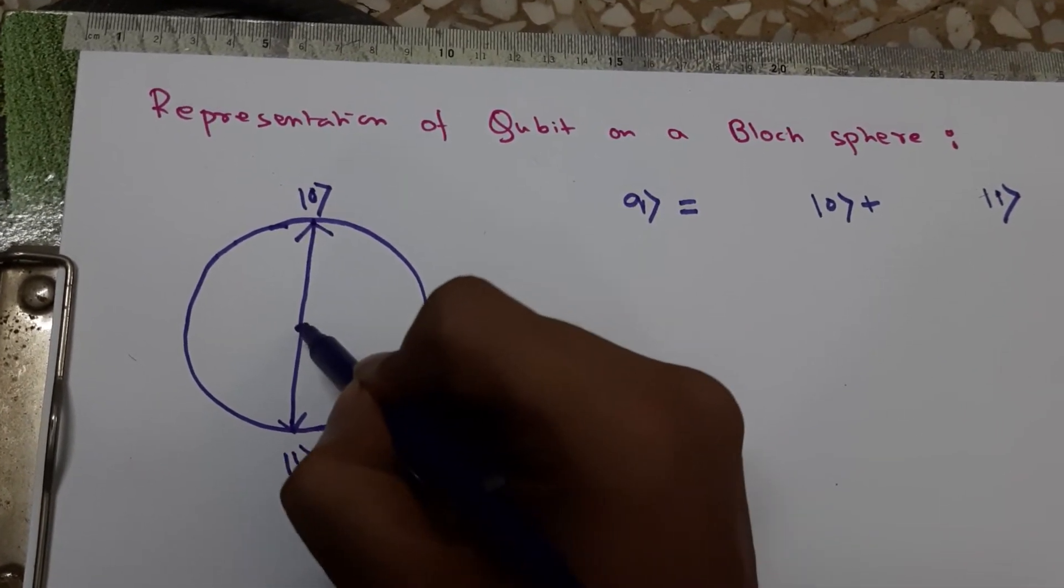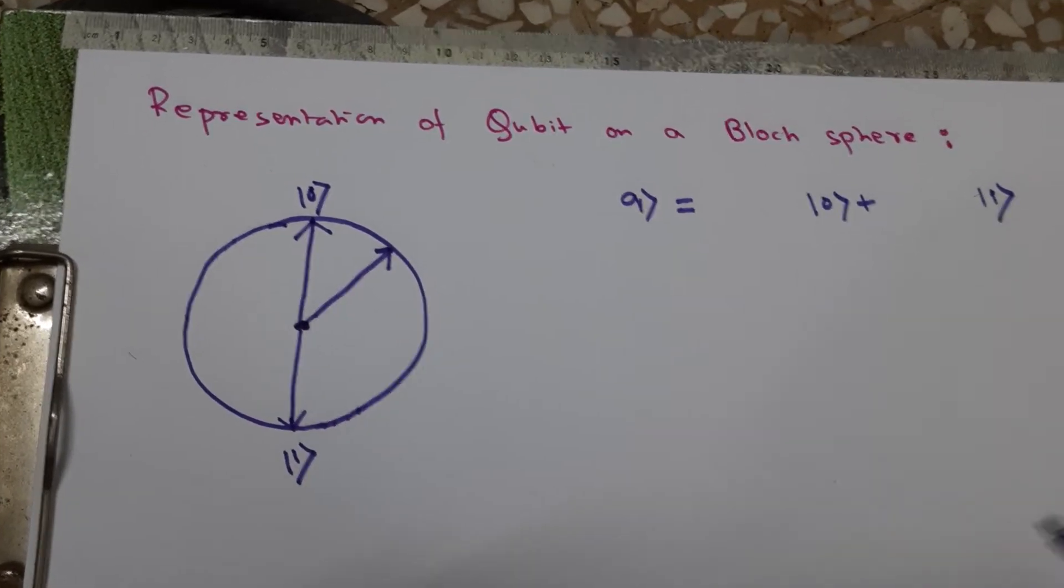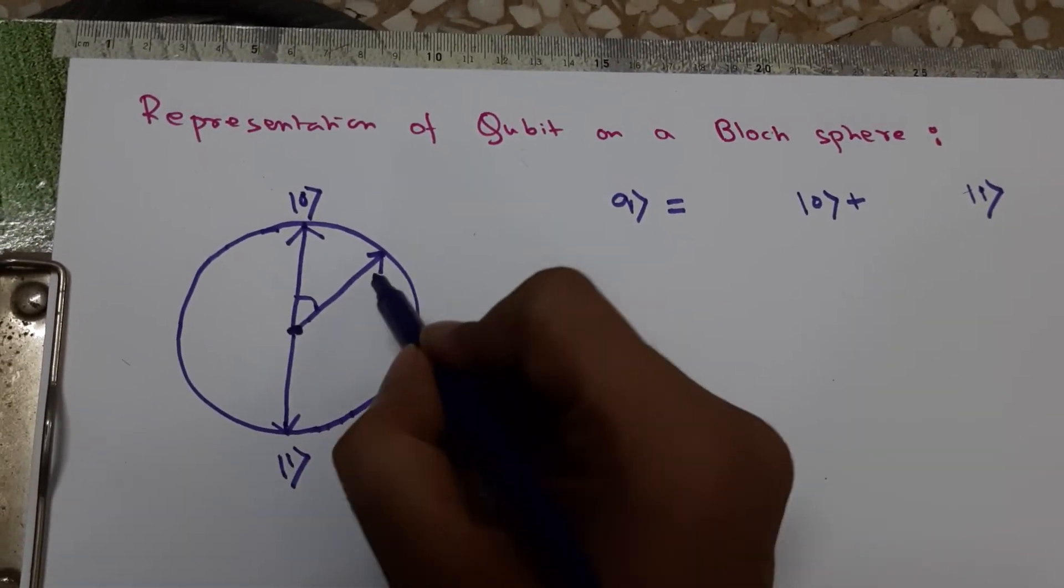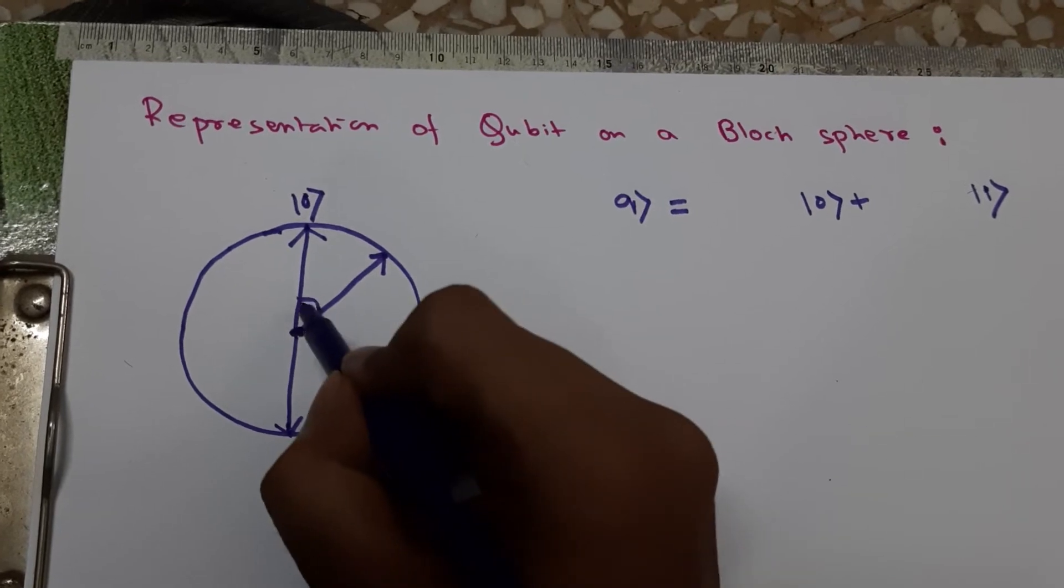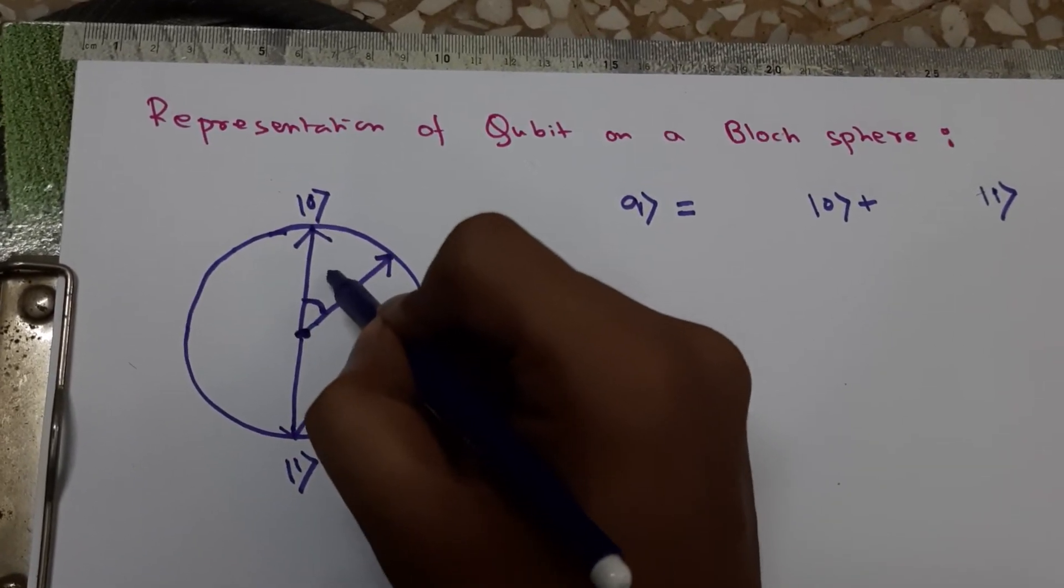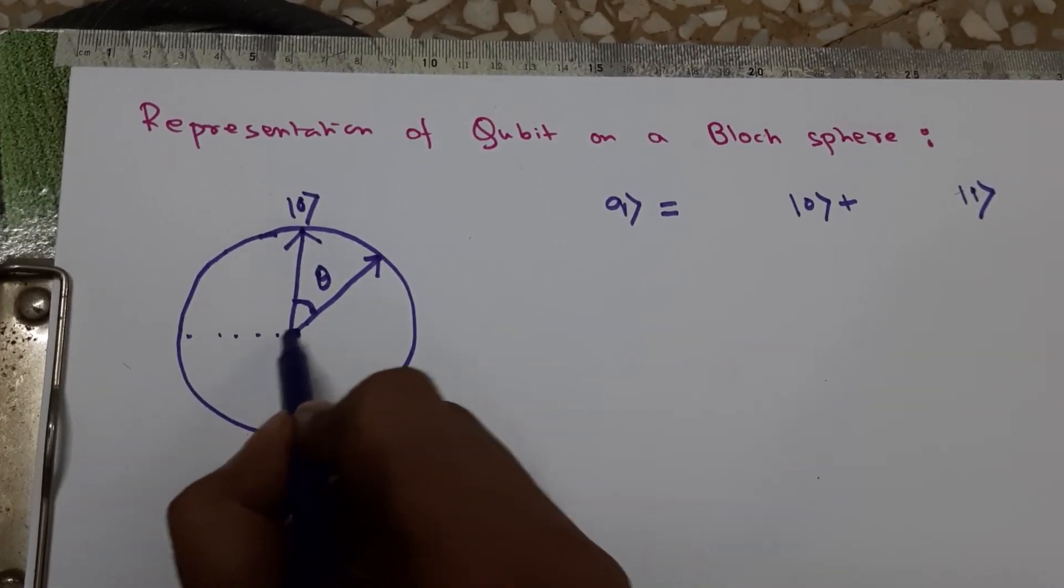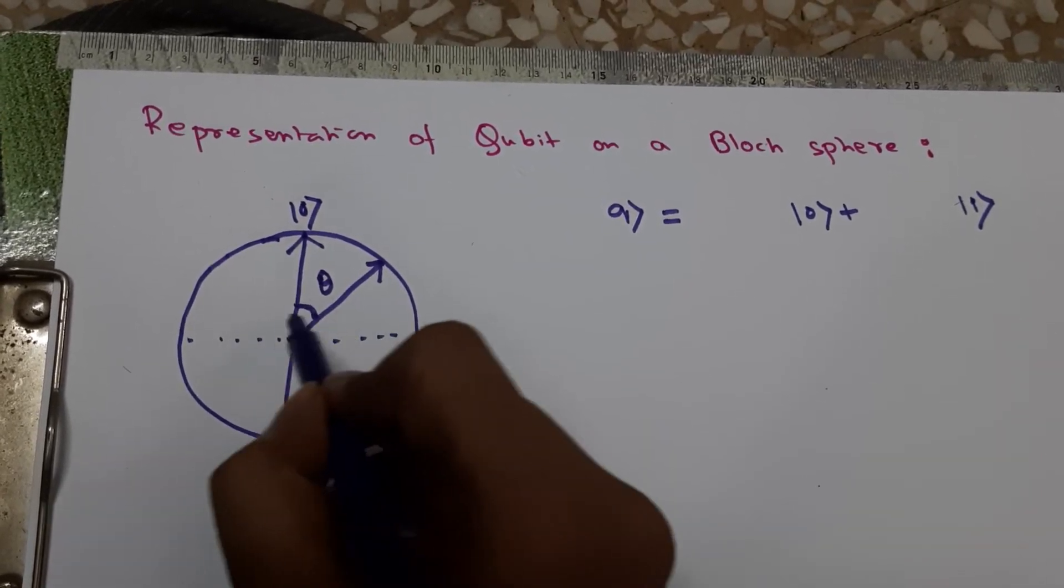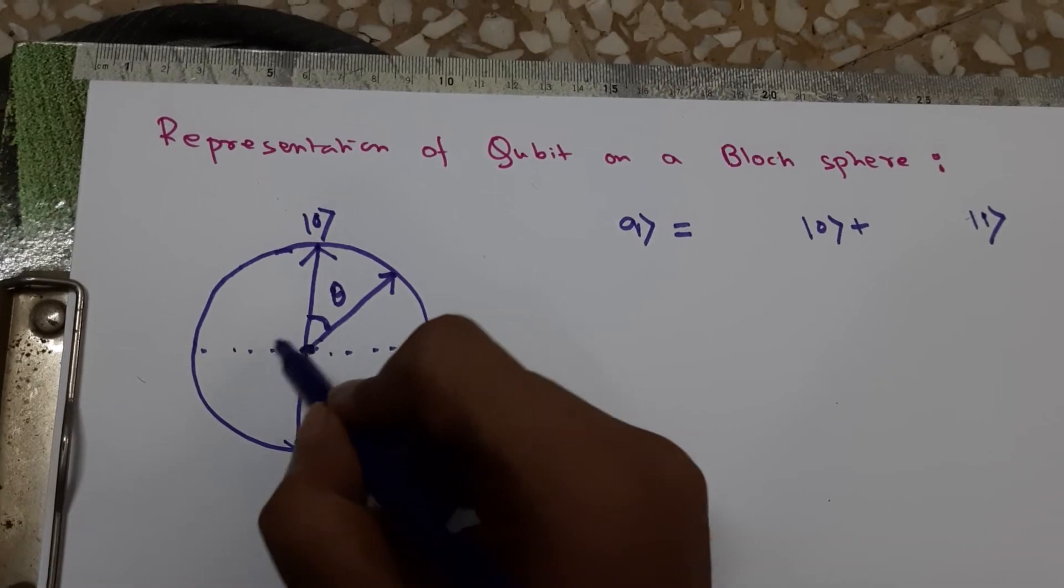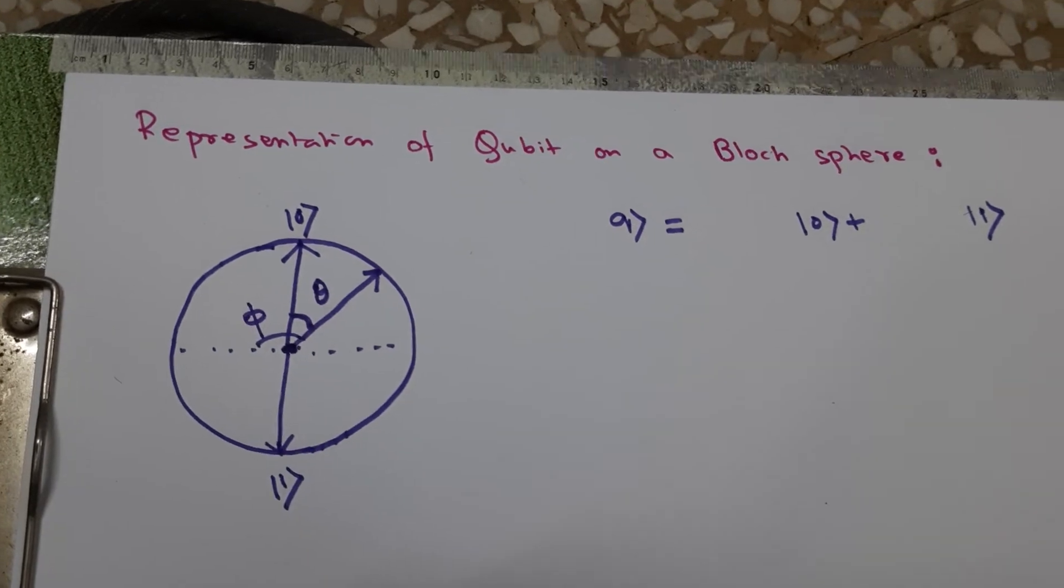The qubit is nothing but a dot on the surface of the sphere. As it is a dot on the surface, it will make two angles with these vectors. Suppose one angle is theta, and another angle will be this rotation angle, which is phi.